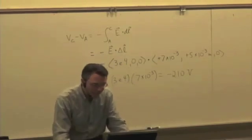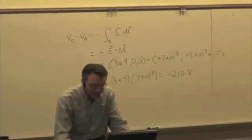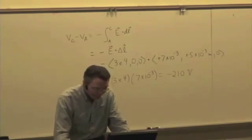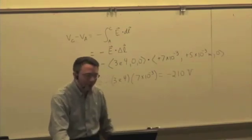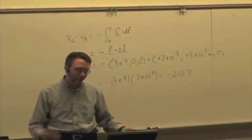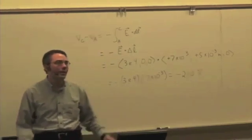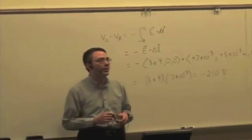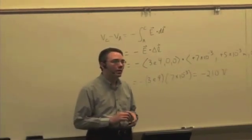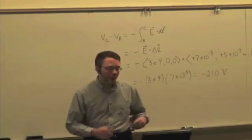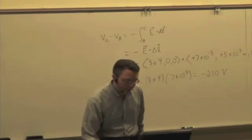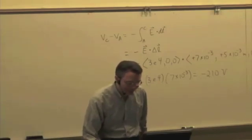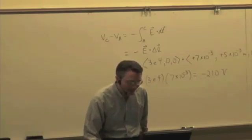So be careful: it's not just field times distance. It's the dot product of the electric field with the path vector. If your path and field are parallel, you just multiply them together. But if the path and field are perpendicular, you get 0 for the potential difference. Most people seem to remember what they did last week, so that's good to see.